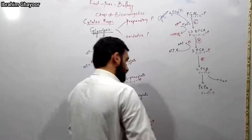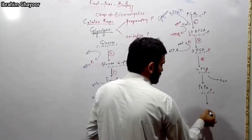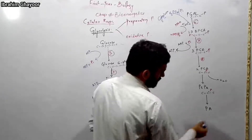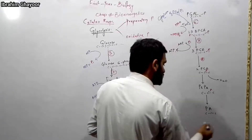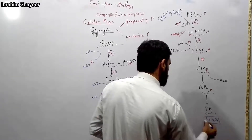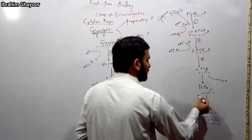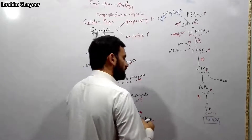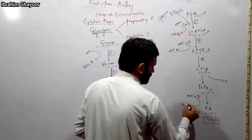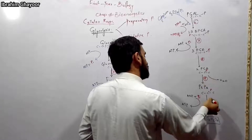Step 9 is the dehydration reaction producing phosphoenolpyruvate (PEP). Step 10 involves ADP combining with PEP: the phosphate from PEP is transferred to ADP to form ATP and pyruvate. This is step 9 and step 10 of glycolysis.